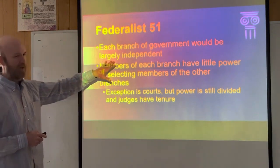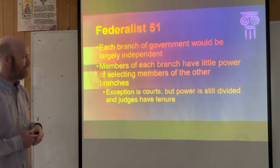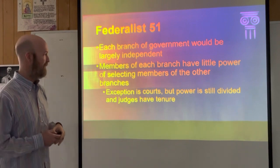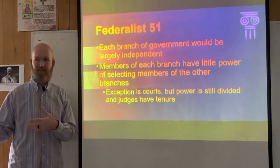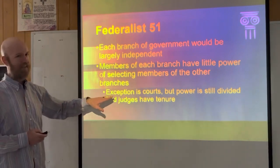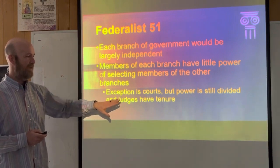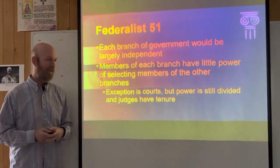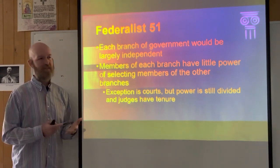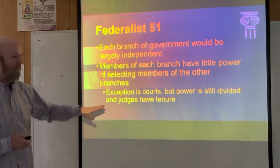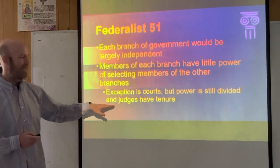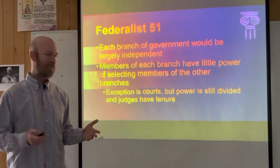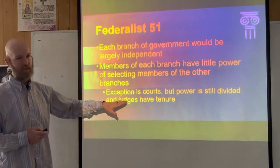Each branch of government would be largely independent, according to Montesquieu and Federalist 51. Members of each branch would have little power to select or control members of the other branches — the president doesn't select representatives, and the representatives don't select the president. There is an exception: the president and the Senate work together to select judges, which gives them some power in appointing judges. But once a judge is appointed to the federal courts, that judge has lifetime tenure — they have that job for the rest of their life unless impeached, retired, or deceased. So once on the federal courts, they're independent.